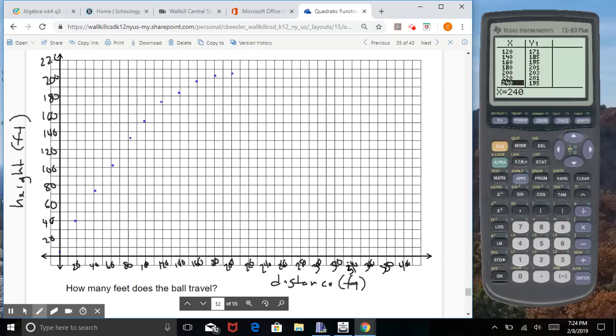220 is 201, so now I'm going to start to see the symmetric pattern coming down, 240 is 195, 260 is 185, 280 is 171, 300 is 153, 320 is 131, 340 is 105, 360 is 75, 380 is 41, and 400 is 3.